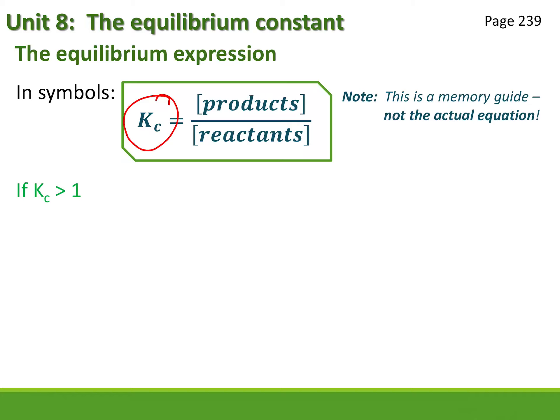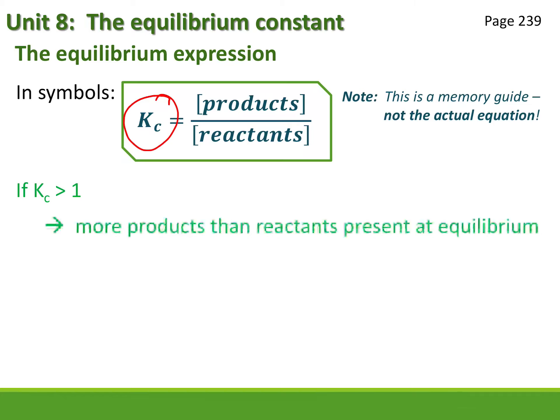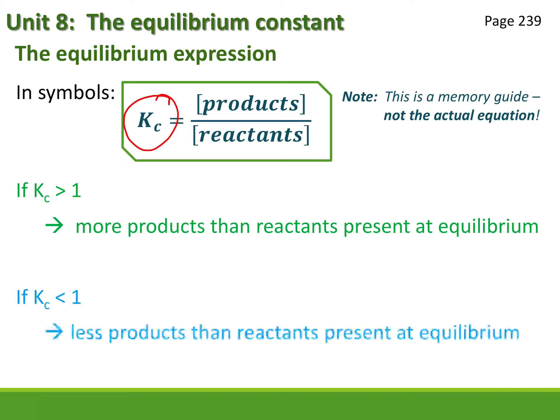We can analyze what the Kc value means. If the equilibrium expression is greater than one, we have a big number on top and a small number on the bottom, meaning we have more products than reactants at equilibrium. If the equilibrium constant is less than one, the larger value is at the bottom, so we have fewer products than reactants. Please note: the equilibrium constant can never equal one and can never be negative — if you get one, you've made a mistake.